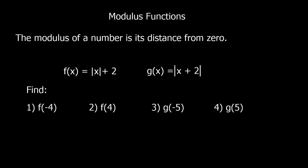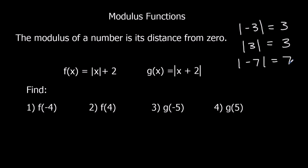This video is about modulus functions. A modulus is the value of a number without paying any attention to what its sign is. So the modulus of minus 3 — you put two straight lines around it — is just plus 3. The modulus of a positive 3 is also 3. It takes no consideration of sign; it's just the distance away from 0. So the modulus of minus 7 is 7, the modulus of minus 9 is 9, and so on.